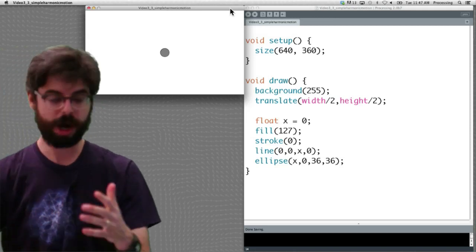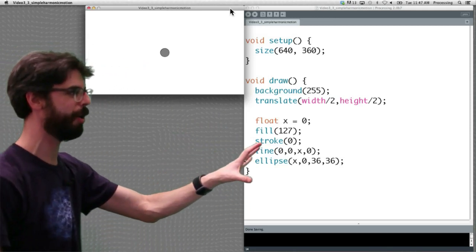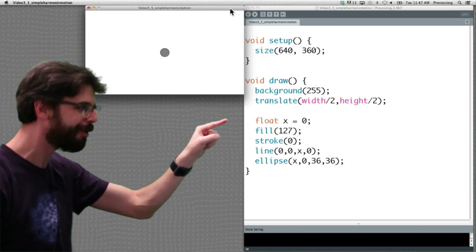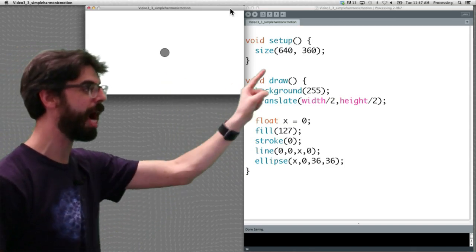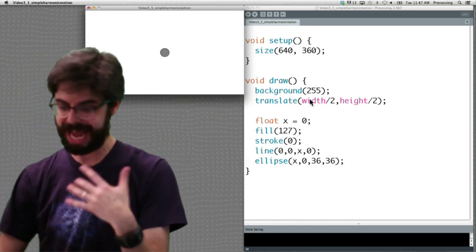So here we are, I have a processing sketch here which is all set up and ready to go. We have x equal to 0 and we're drawing a circle at x, but now we want to map, we want to have that circle oscillate back and forth.